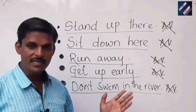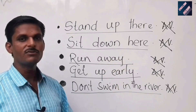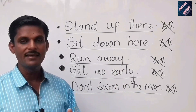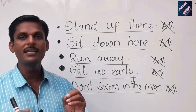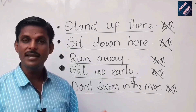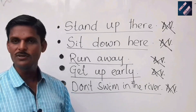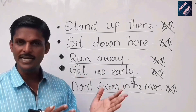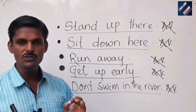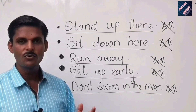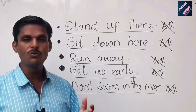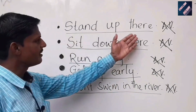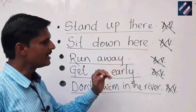Five sentences are cited here on the board and they are all imperative sentences. But we do not say each of them is an active voice. Why? Because there is no object in each sentence. If there had been an object, a 'what,' 'who,' or 'whom' question would have come. For example: 'Stand up there' — there is no object, so it is not in active voice.